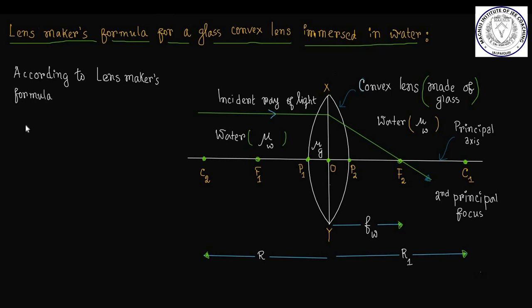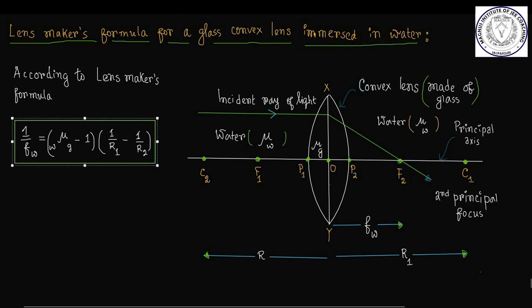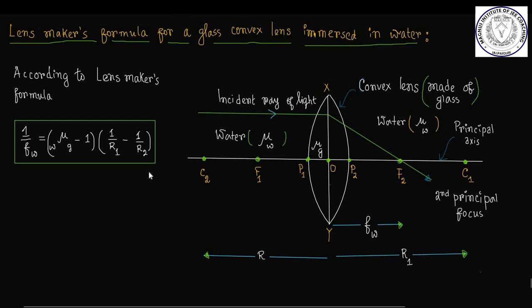According to Lensmaker's formula, 1 by fw — the reciprocal of the focal length of the convex lens immersed in water — is equal to w·μg minus 1, multiplied by (1/r1 minus 1/r2), where r1 and r2 are the radii of curvature of the two surfaces of the convex lens.